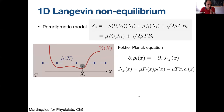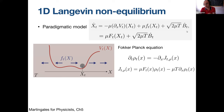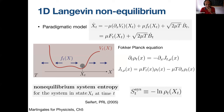I will introduce martingales by considering a familiar example: a one-dimensional diffusion with a potential that may change in time following a protocol, plus an external force F(t), in the presence of a thermal bath inducing Gaussian white noise. You can solve the Fokker-Planck equation for the probability density. Since 2005, in work by Udo Seifert, the notion of non-equilibrium system entropy was introduced, associated to the particle being at position x at time t.